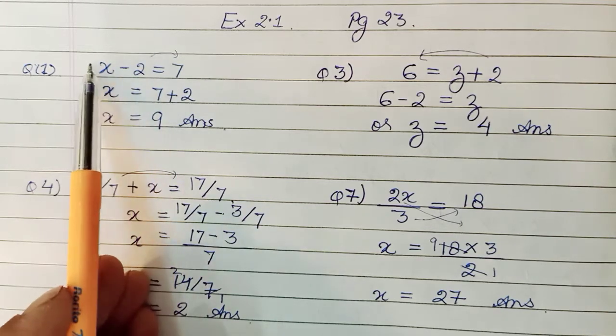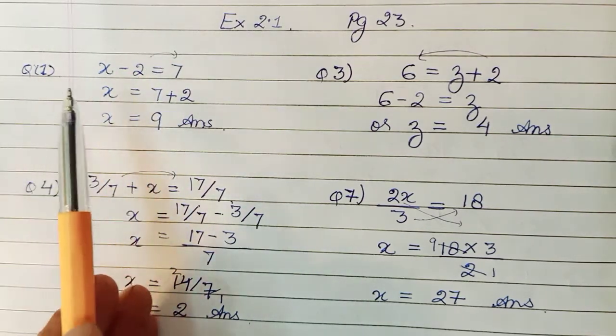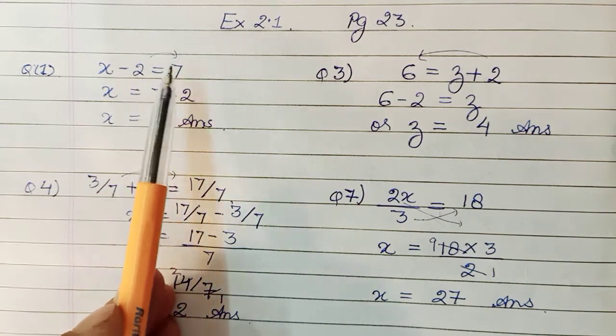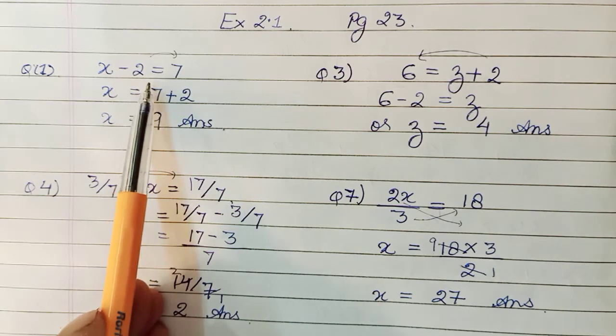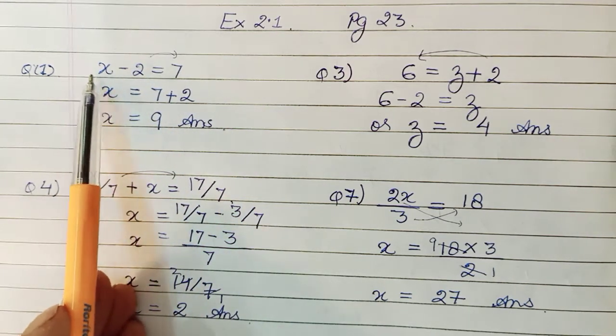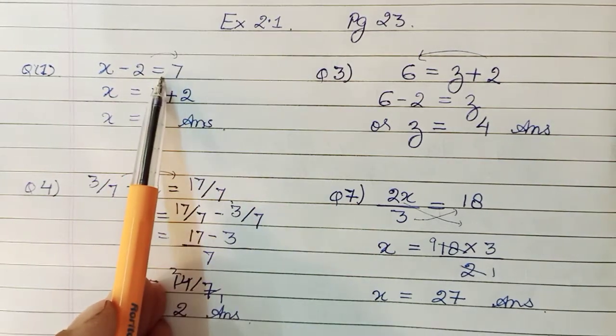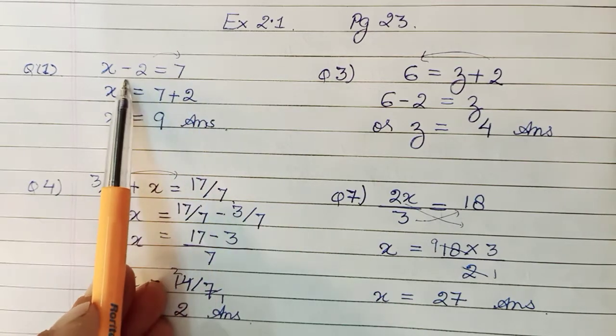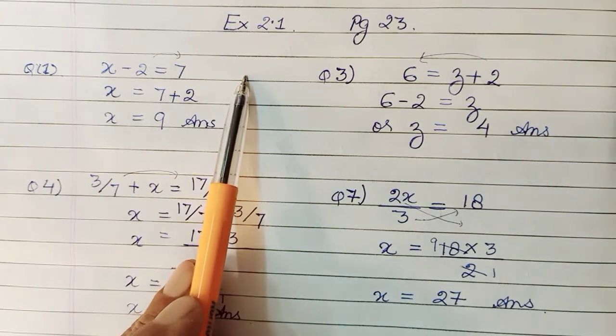For solving this, the key is that whatever is with x, you need to remove all those numbers. And how is that removing done? By taking it to the other side of the equation. For that, the operation has to be reversed. Like if it is subtraction here or a number is negative here, this will go to the other side and become plus.